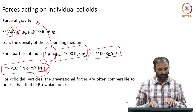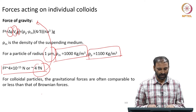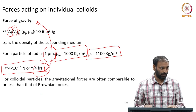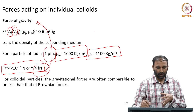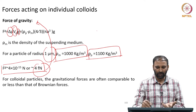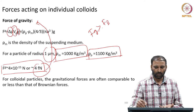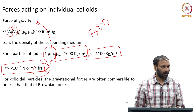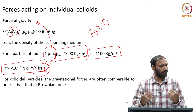For particles of colloidal length scale around 1 micrometer, gravity and Brownian force are very much comparable. If you make the particle bigger, gravity will dominate — F_gravity becomes much greater than F_Brownian. The Brownian force tends to keep the particle suspended in the fluid, while gravity tends to make it sink.